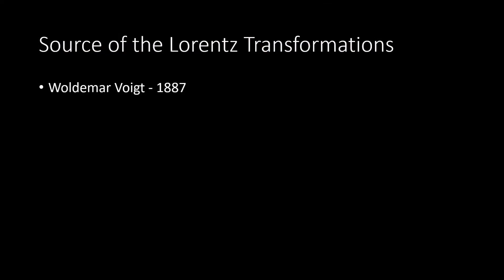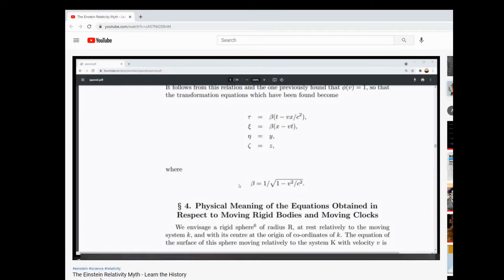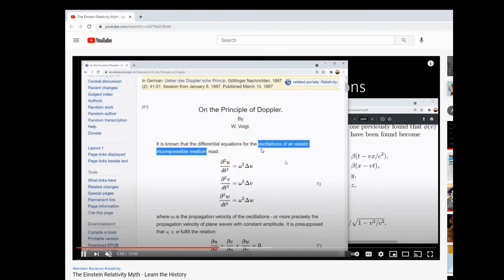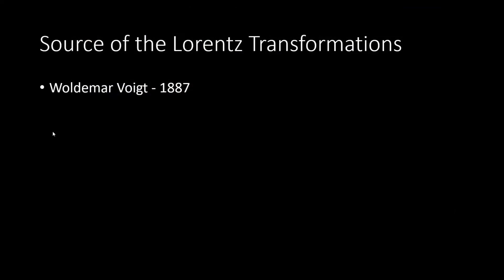Let's look at a demonstration that helps explain this "1 equals 2" problem. As you know from the previous video, Einstein's equations were taken from Woldemar Voigt. Voigt derived these equations from the Doppler effect and oscillations in a medium, so it really shouldn't be a stretch to use a Doppler effect demo to try to give an analogy of this "1 equals 2" idea.